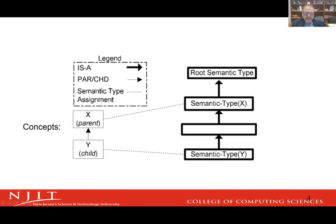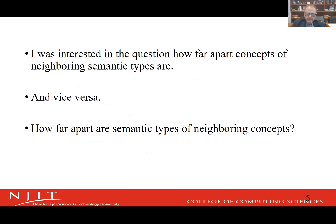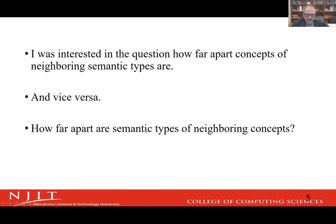Around 2008, I got curious and wanted to know: if two concepts are immediately next to each other, why is there something in between at the semantic type level, and how far apart are those semantic types? Or, in simple terms, if concept X and Y are directly connected, how many intermediate semantic types could there be between the semantic type of Y and the semantic type of X?